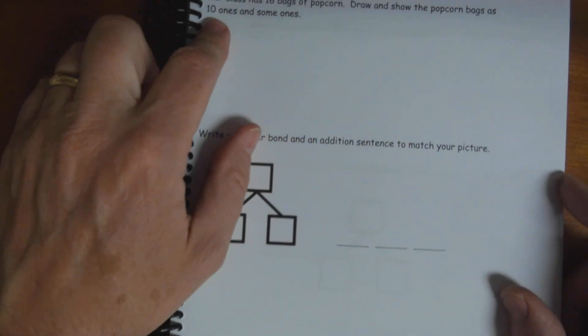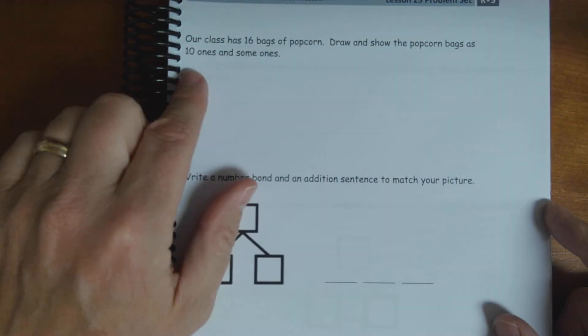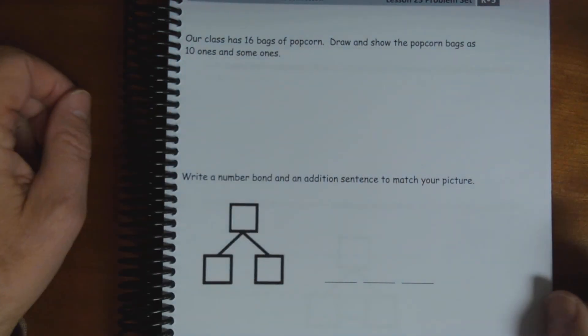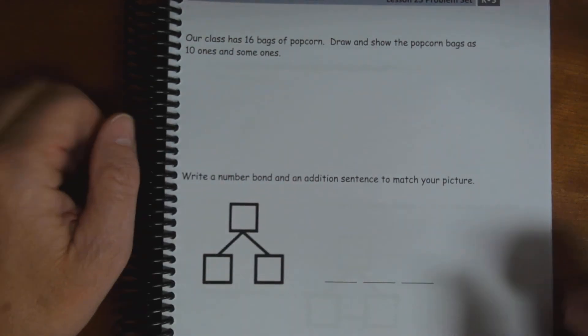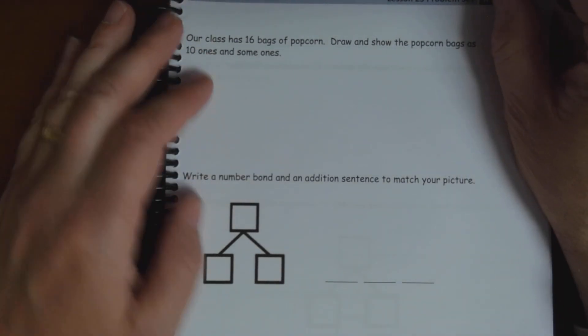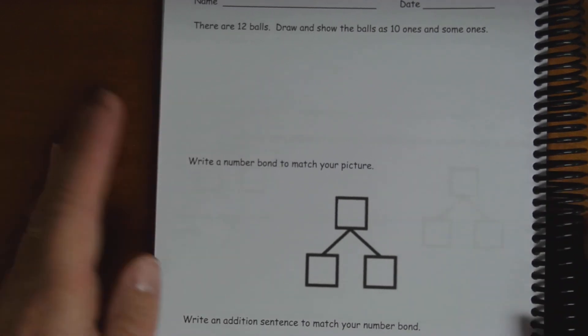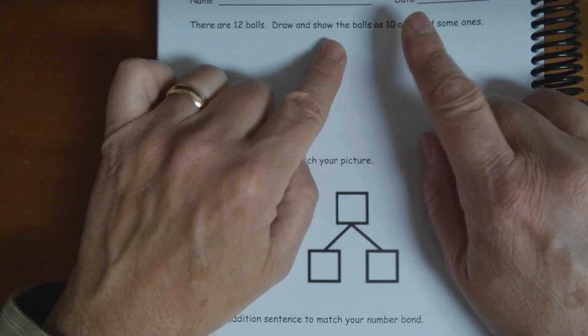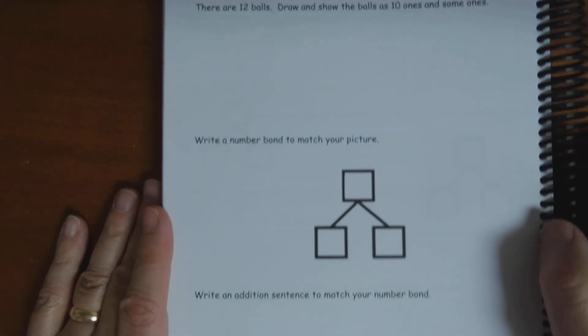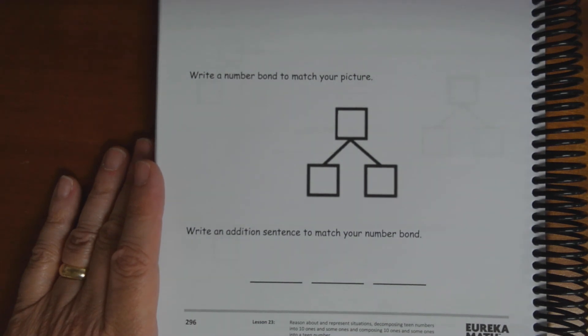One more on the back. Our class has 16 bags of popcorn. Draw and show the popcorn bags as 10 ones and some ones. And then you got a number bond and the number sentence for you to do for that one. And then you're done with the problem set. Later on today, you're going to do the exit ticket, which is the same thing. Just one more. Problem about 12 balls. Show the balls as 10 ones and some ones. Number bond and your number sentence. Okay? That's math for today.